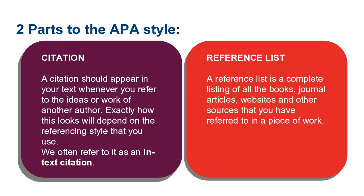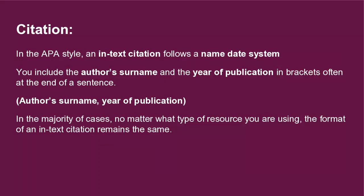A reference list is a complete listing of all the books, journal articles, websites, and other sources that you have referred to in a piece of work. Let's look at citation first. In the APA style, an in-text citation follows a name-comma-date system.